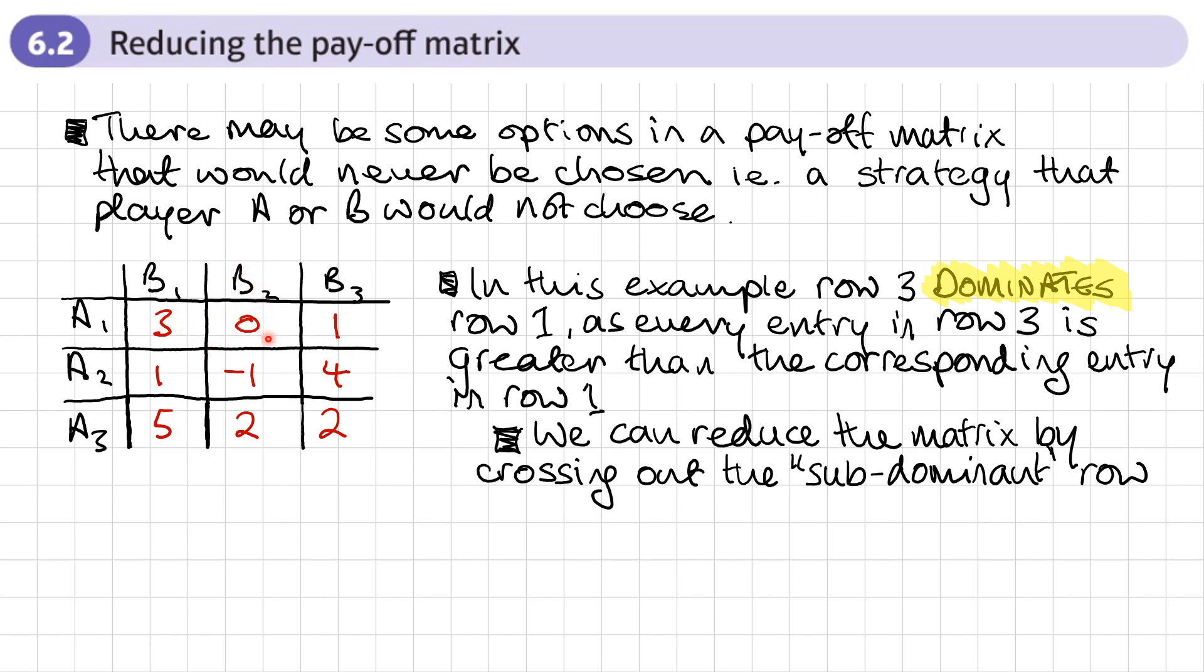It looks like column 2 dominates column 1 because every entry is smaller. So from B's perspective, it's the other way around.